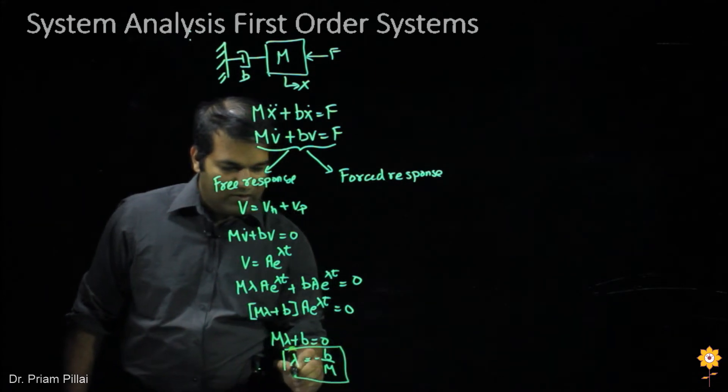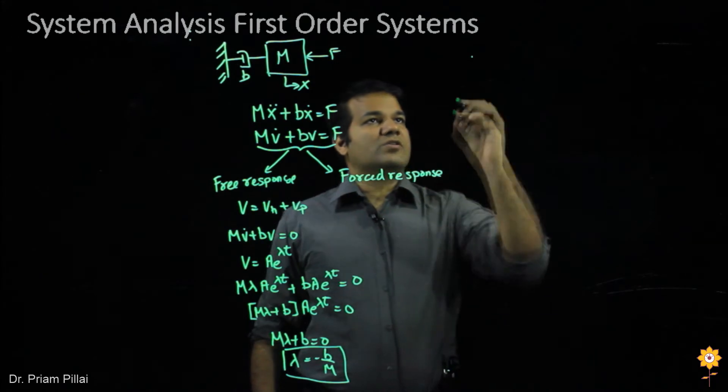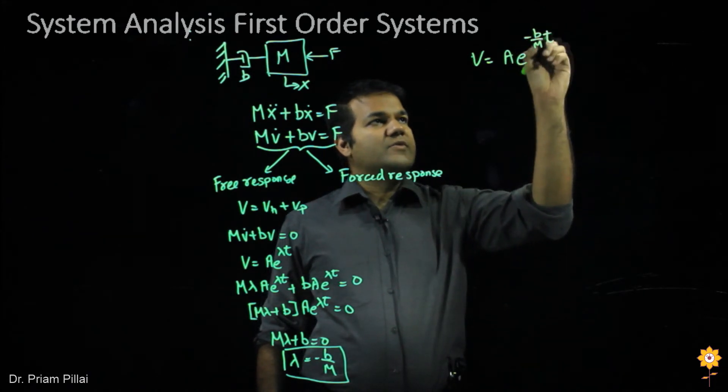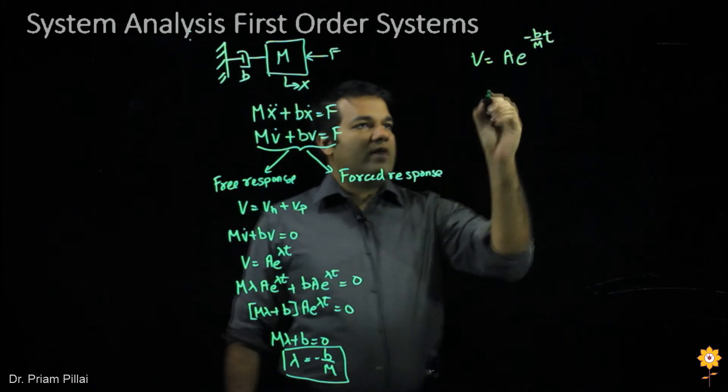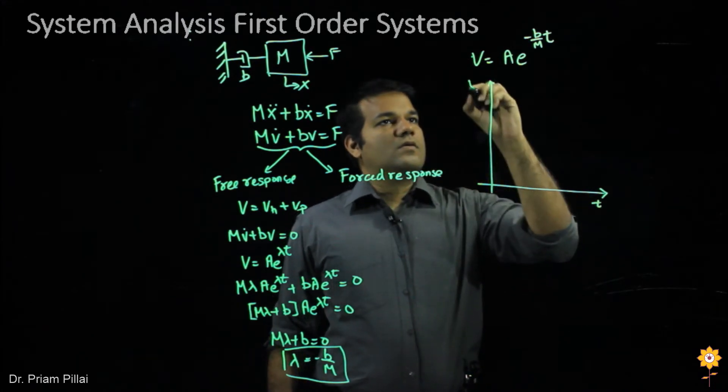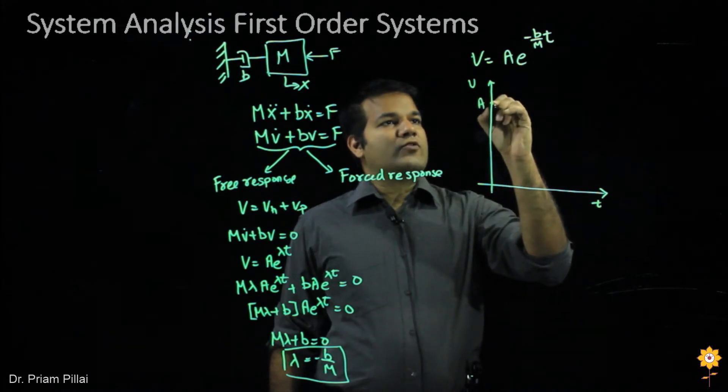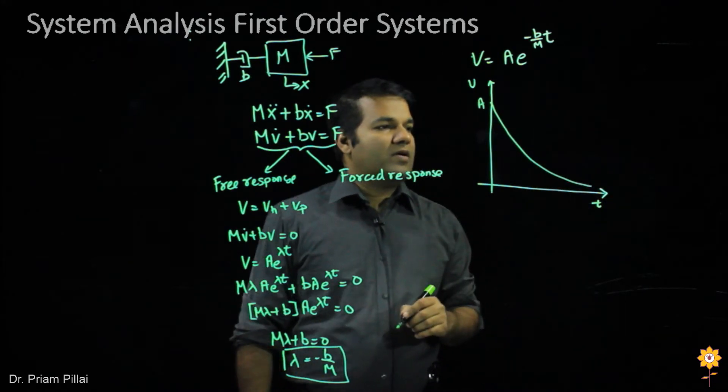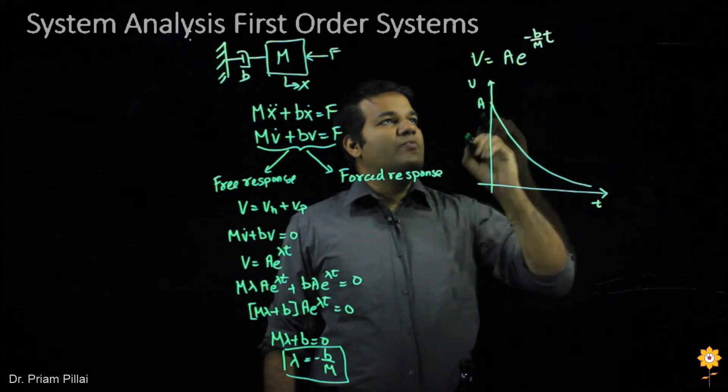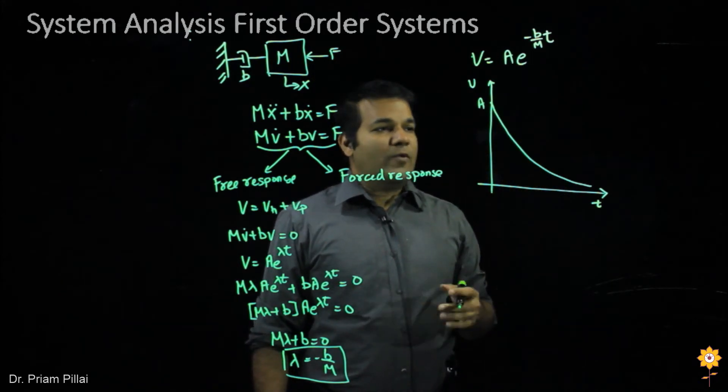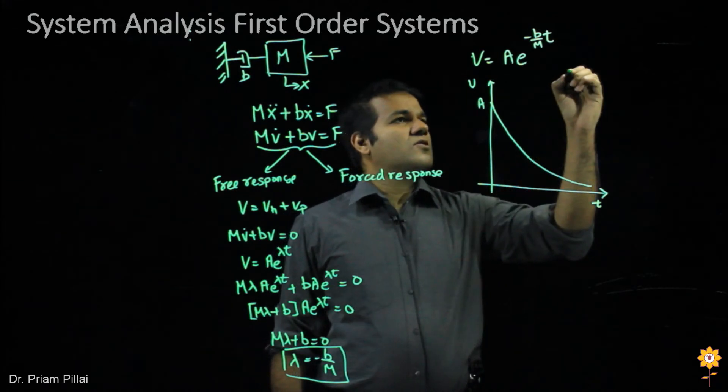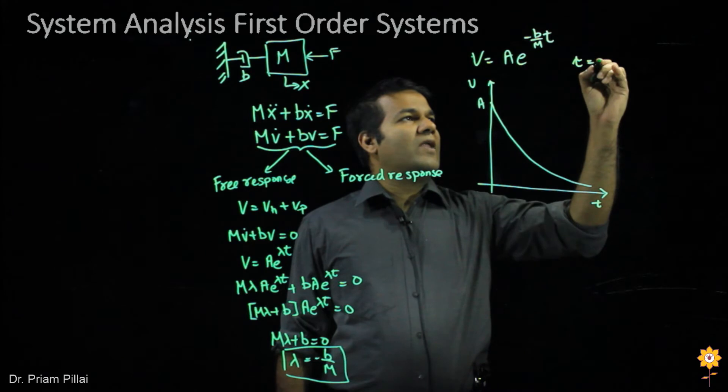Lambda is what we call a time constant. So the total solution to this equation, v would equal ae to the minus b by m times t. The time constant tau is the reciprocal of what lambda came out to be, which would be m by b.